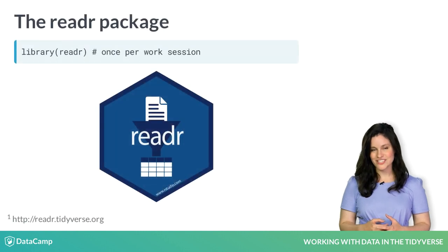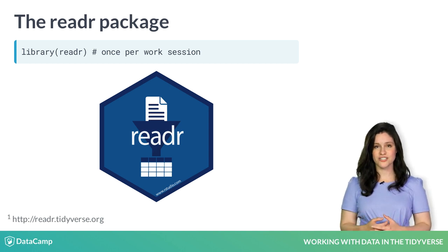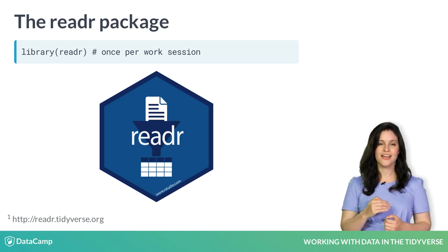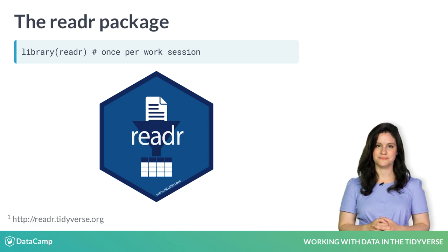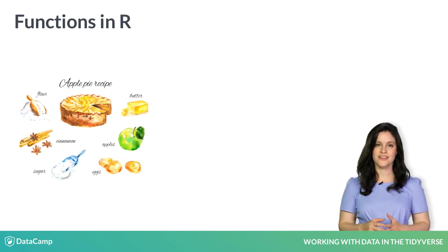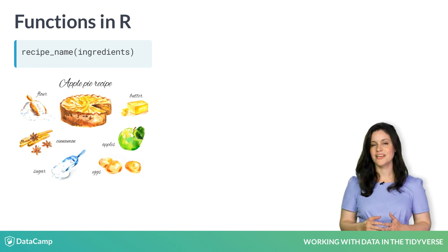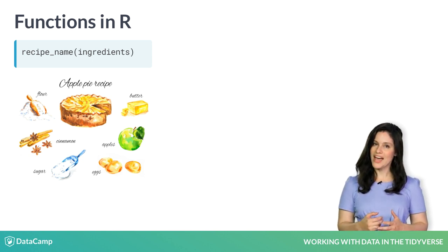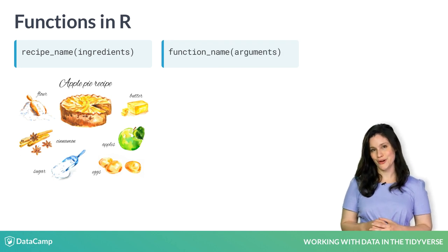The readR package is for reading rectangular data into R. We'll use the read_csv function to read data from a CSV file, which stands for comma separated values. This means that commas separate values within a row, and each row is a new observation. Think of read_csv like a recipe — it tells R what to do and how to do it. But every recipe needs ingredients. In the same way, functions need arguments to work. Function arguments go within the parentheses.